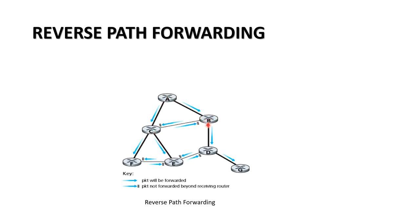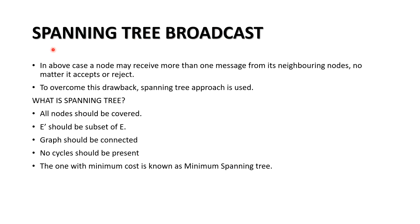However, in reverse path forwarding there is still a drawback: links are used unnecessarily for packets that get rejected. To overcome this, we use the spanning tree concept. A broadcast spanning tree is basically a graph in which all nodes are connected with no cycles. The definition: all nodes should be covered, edges E' should be a subset of E, the graph should be connected, no cycles should be present, and the one with minimum cost is called the minimum spanning tree.